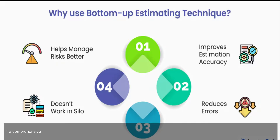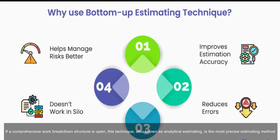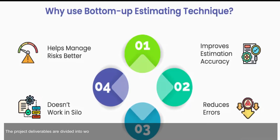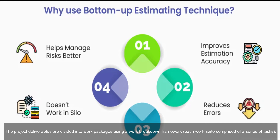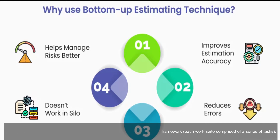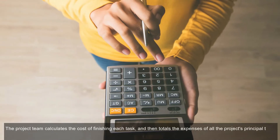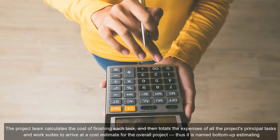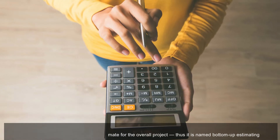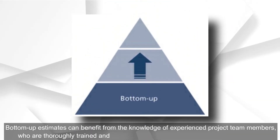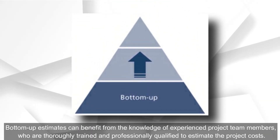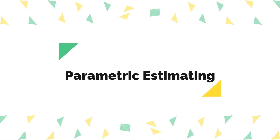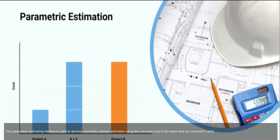Bottom-up estimating: if a comprehensive work breakdown structure is available, this technique, also known as analytical estimating, is the most precise estimating method. The project deliverables are divided into work packages using a work breakdown framework. The project team calculates the cost of finishing each task, then totals the expenses of all principal tasks and work suites to arrive at an overall cost estimate. Bottom-up estimates can benefit from the knowledge of experienced, professionally qualified project team members.